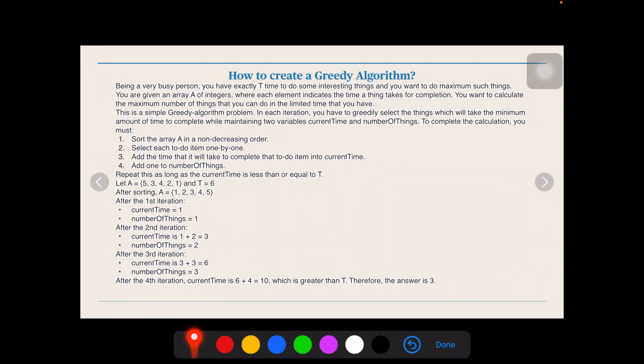How to create a greedy algorithm? This is a beautiful small question here for you. Being a very busy person, you have exactly T time to do some interesting things and you want to do maximum number of things. So, you have just a limited T time and you want to do maximum number of things. You have N number of things and each thing has some time limit. Say here, you have 6 hours and there is a task that has 5 hours, there is a task that is 4, 3, 4, 2, 1. So, you have to maximize the number of tasks using a greedy algorithm. So, what is the way of doing it?